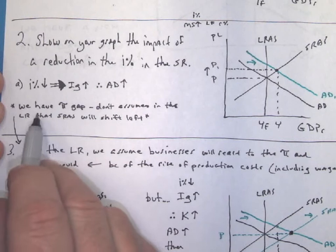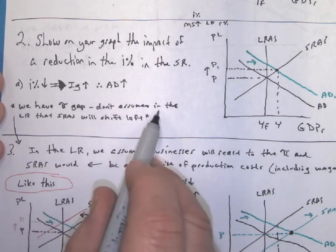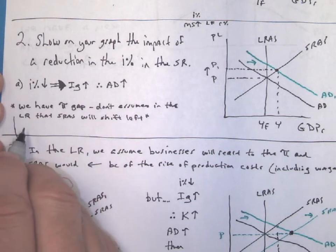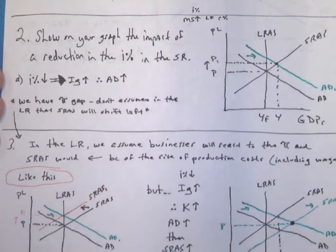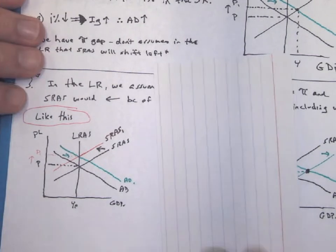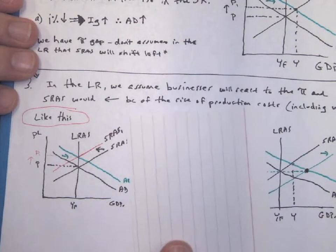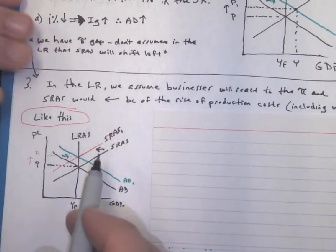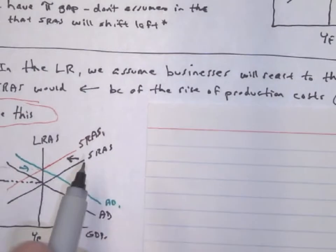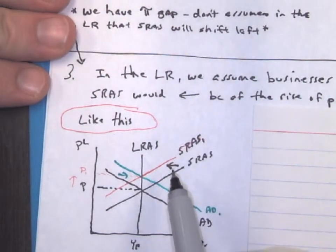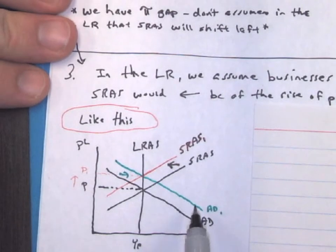When we have our inflationary gap, don't assume in the long run that short run supply will shift to the left. Now, if we revisit the idea of short run supply shifting to the left, sorry, I'm trying to rearrange things.